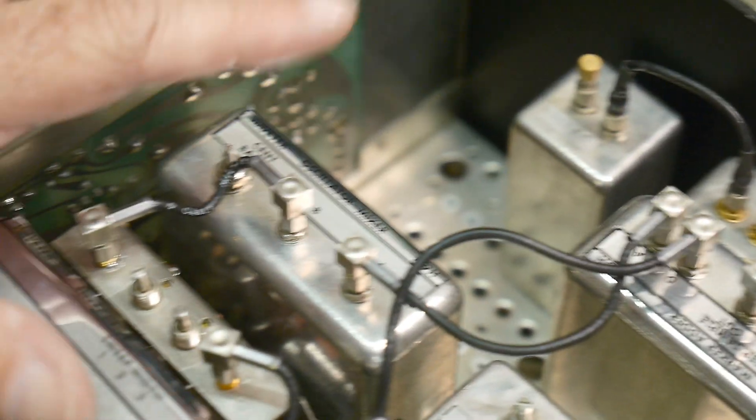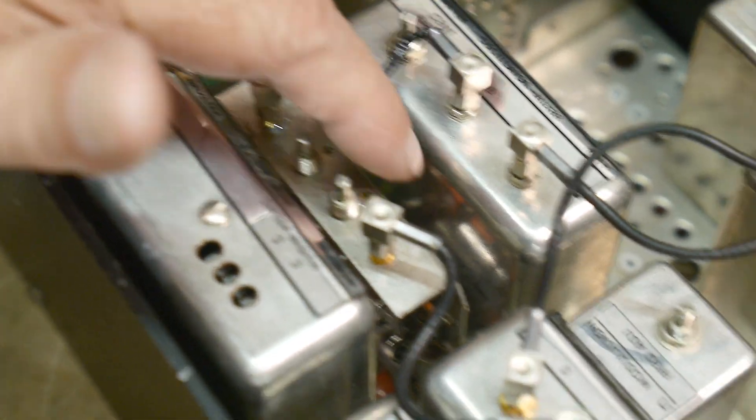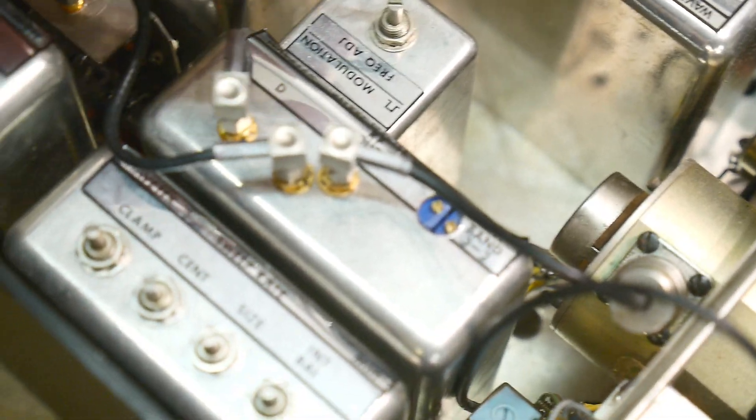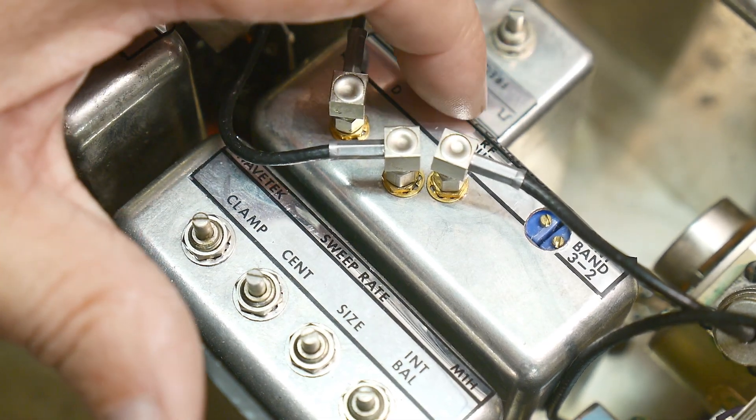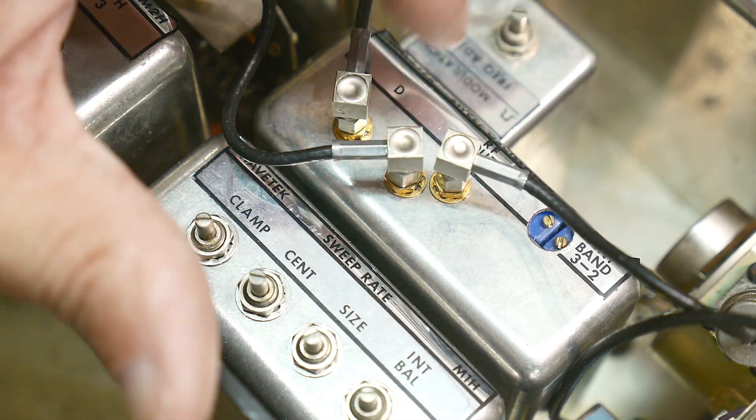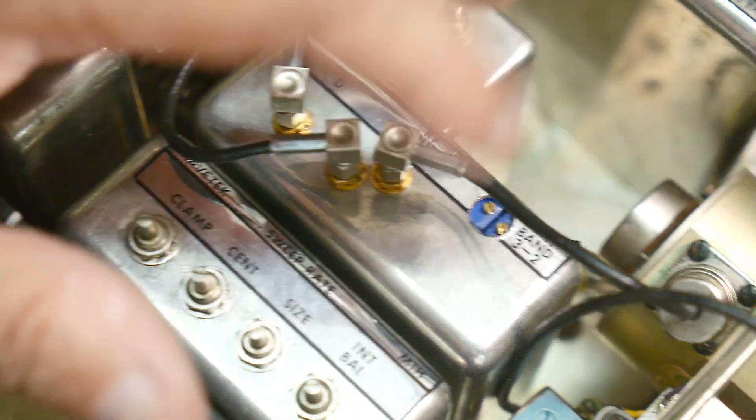All right, so we have this generates the sweep, this generates the oscillation, this is the amplifier it goes into. This box which is the channel 1, channel 2, channel 3 switcher thing has channel 2 and 3 oscillators in it.